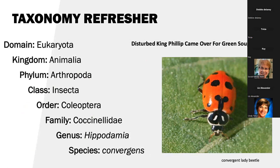A taxonomy refresher. I like to always take a step back and realize what we're all talking about. The tree of life is divided into this: we start with our domain — we're talking Eukaryota here, multicellular organisms. The kingdom is animals for this organism, the beetle of course. The phylum is Arthropoda, the class Insecta — all the insects; it used to be Hexapoda. The order is Coleoptera, the sheath-winged insects. And this convergent lady beetle is in the family Coccinellidae, the genus Hippodamia, and the species convergens. I always like to think of 'Disturbed King Philip came over for green soup' as the mnemonic acronym.